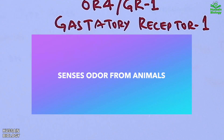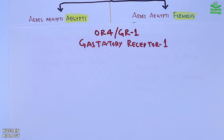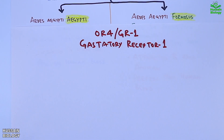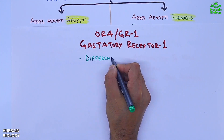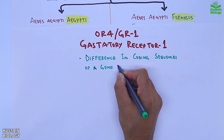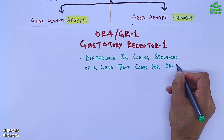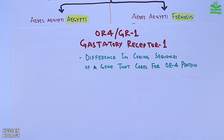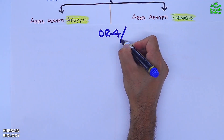This receptor is found in both types of Aedes, but there is a difference in the coding sequences of the gene in both subspecies — the gene that codes for the OR4 protein in both types.